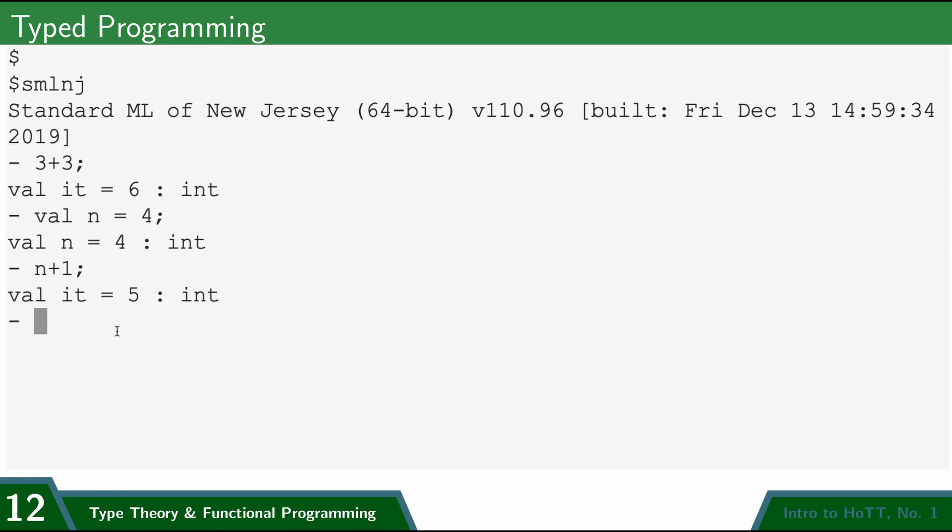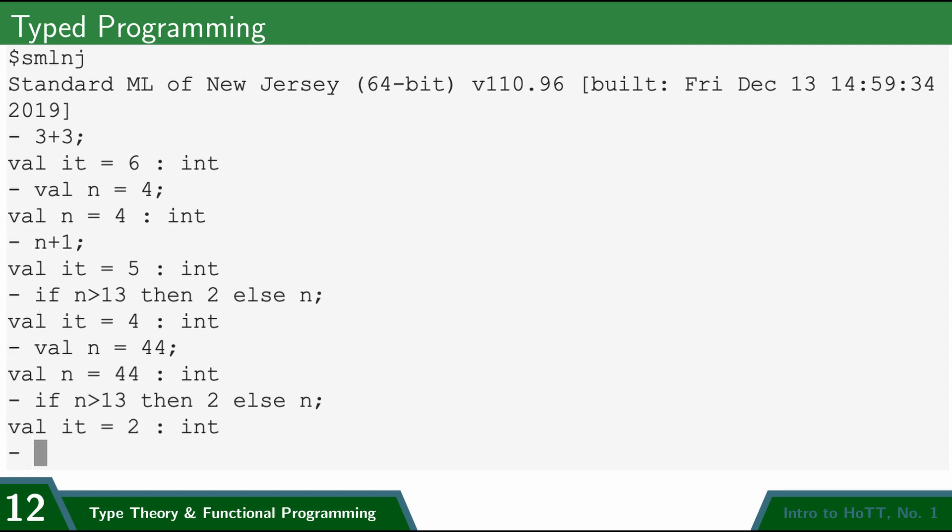And I can also have compound expressions like an if-then-else. So if I calculate this expression, if n is greater than 13, then 2 else n, since n is 4, which is not greater than 13, it's going to give me n back, which is 4 instead of 2. If I set n to be 44, for example, then this will give me 2.